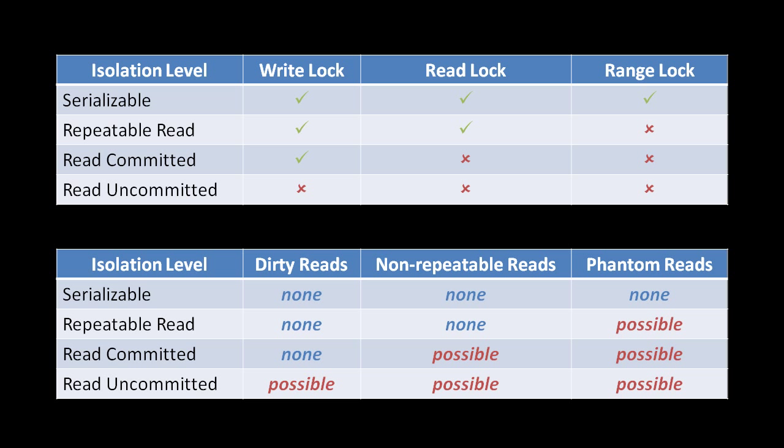A dirty read occurs when in transaction X, we read some data which has been updated by another transaction Y, but that data was not yet committed by transaction Y. Transaction X is effectively reading uncommitted data — data that's been modified in the database but not properly committed. This is generally undesirable because that uncommitted data might get rolled back, and there's also the possibility that within transaction Y, when that data was updated, some other piece of data was meant to be updated alongside it, creating a consistency problem where you have half-updated data.